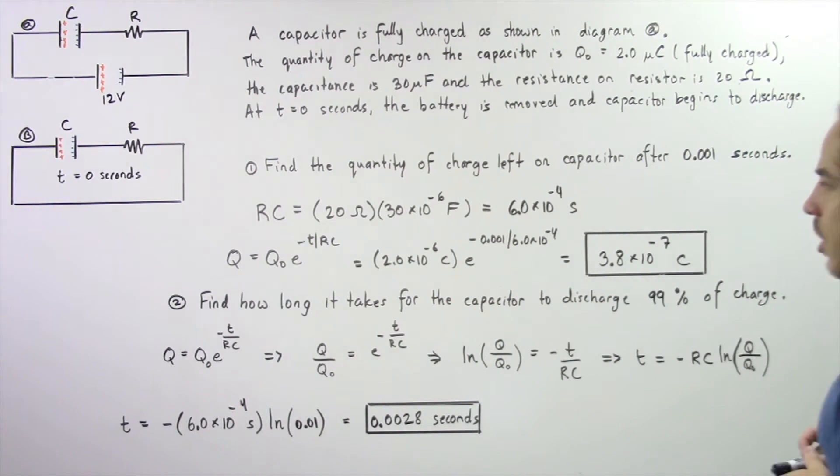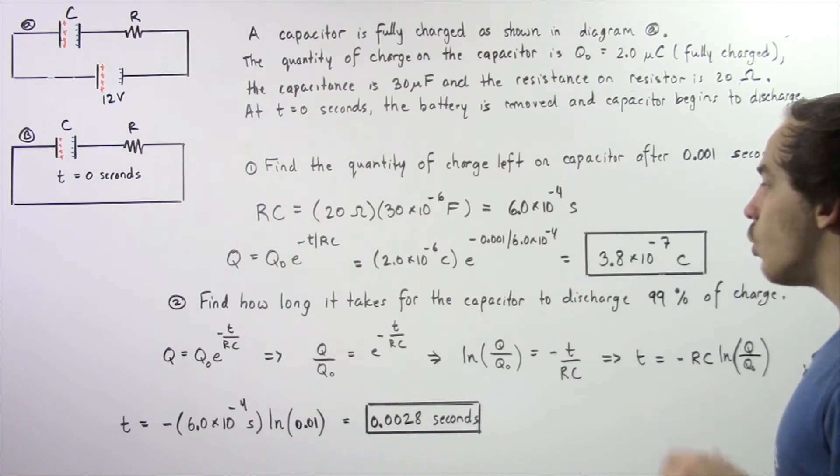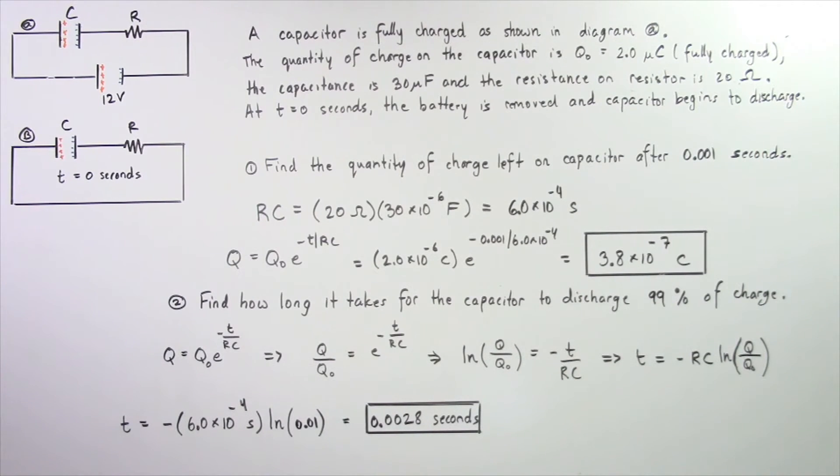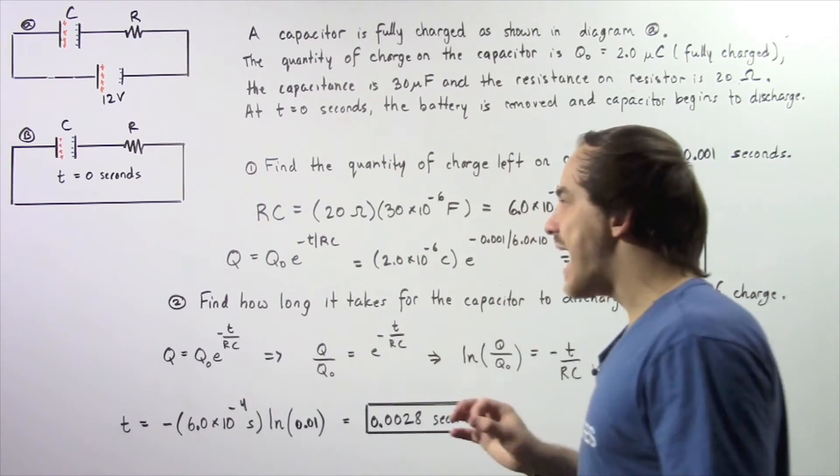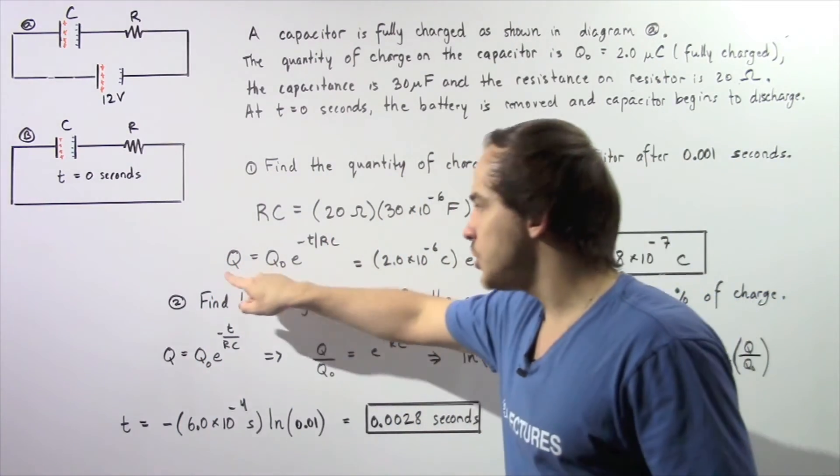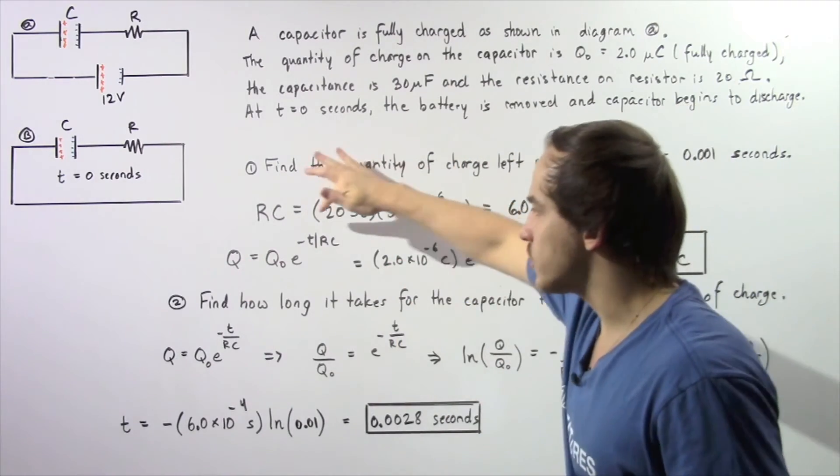Now let's move on to part B or part 2. Find how long it takes for the capacitor to discharge 99% of its electric charge. Once again, we want to use this equation, but now instead of solving for Q, we want to solve for T.